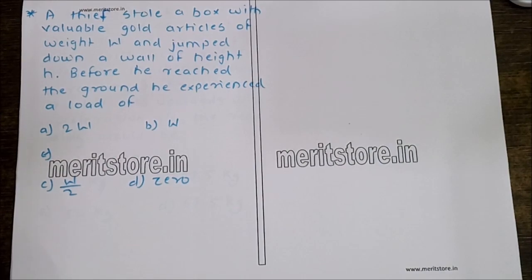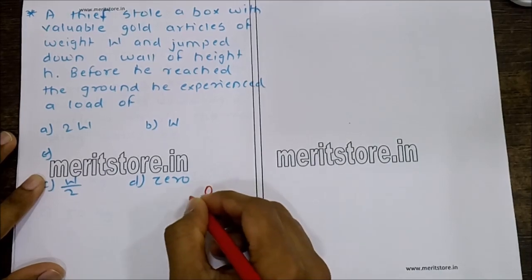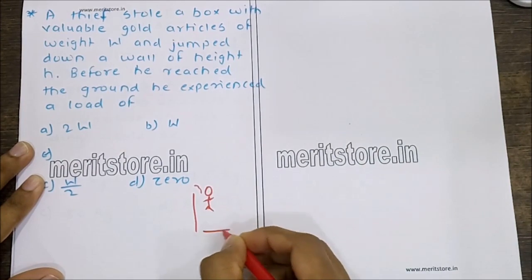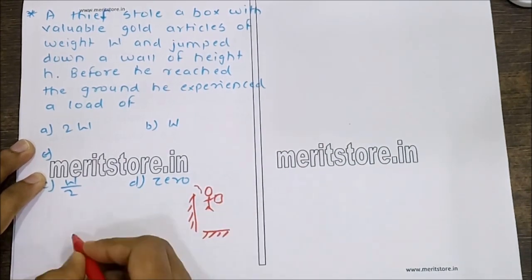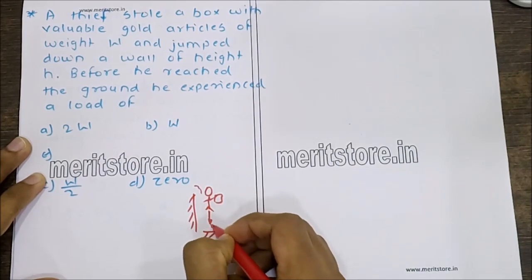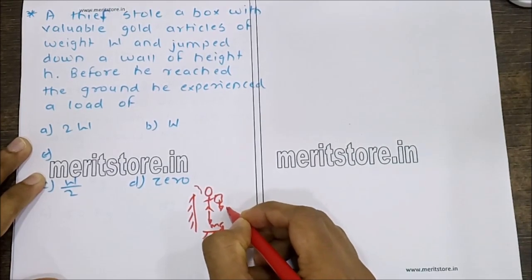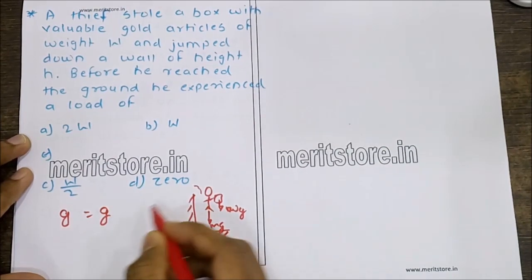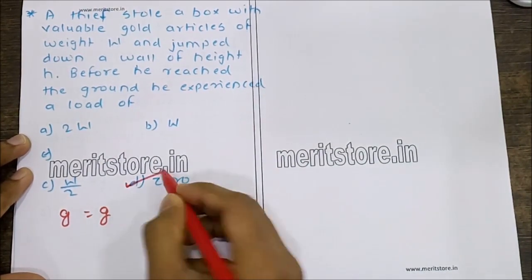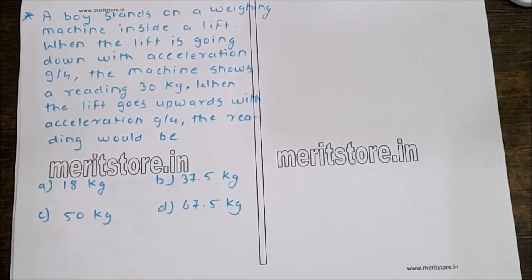A thief stole a box of gold of weight W and jumped down a wall of height H. Before reaching the ground, what load does he experience? Since he is in mid-air, both the thief and the box are in free fall with the same acceleration G, so the apparent load is 0. Hence option D is the correct answer.